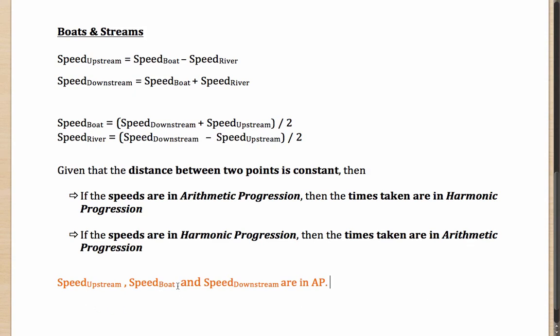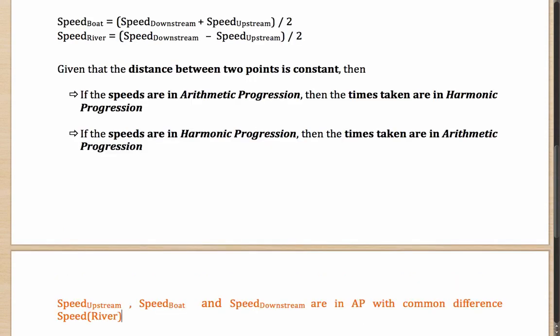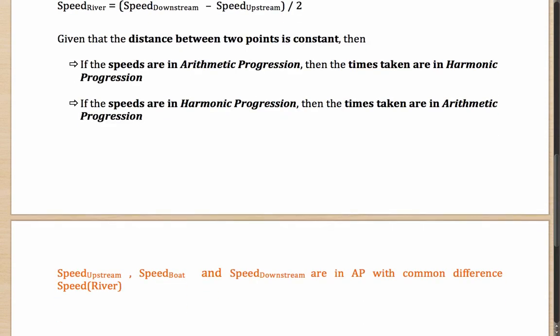Because let's say if you have speed of the boat as X and speed of the river as R, then speed upstream is X minus R, speed of boat is X and speed downstream is X plus R. Or you can say that they are in an AP with the common difference of speed of the river. And that is a very important idea that can be used to solve a lot of problems.